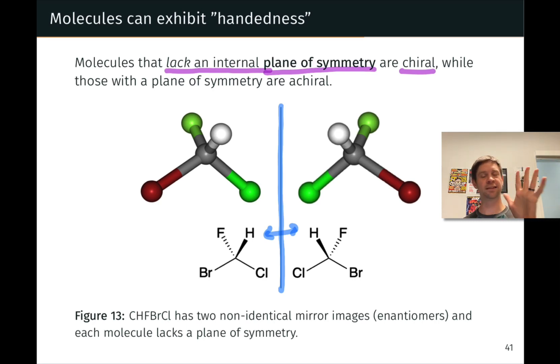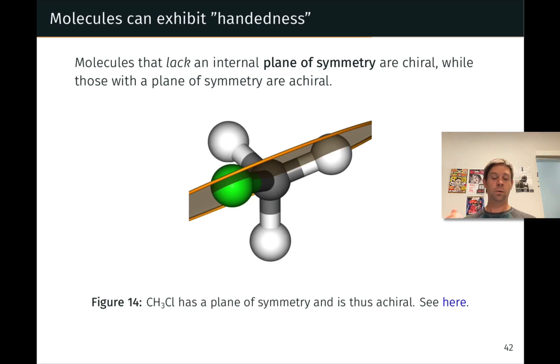Now, molecules that have a plane of symmetry are achiral. Molecules that have a plane of symmetry are identical to their mirror images in the same way that you, being symmetric, are identical to your mirror image. And many, many molecules actually have planes of symmetry. CH3Cl is one example. So let's take a look at this molecule now.